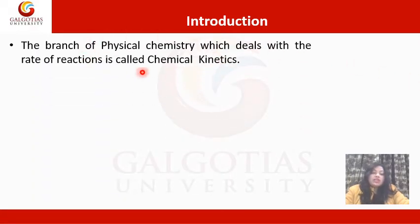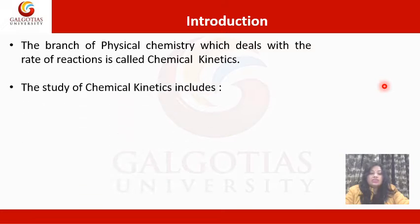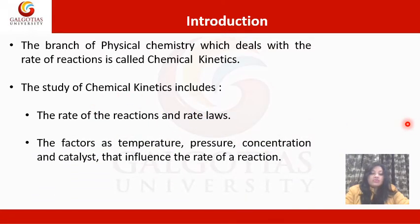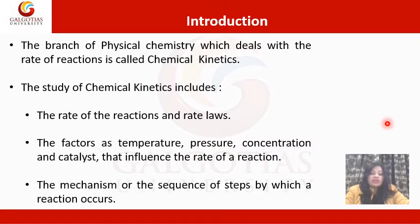The branch of physical chemistry which deals with the rate of reaction is called chemical kinetics. The study of chemical kinetics includes the rate of reaction and rate laws, the factors such as temperature, pressure, concentration, and catalyst that influence the rate of reaction, and the mechanism or sequence of steps by which a reaction occurs.